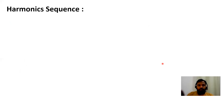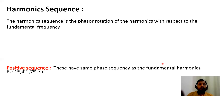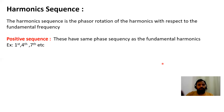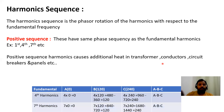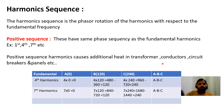Now we will see the harmonic sequence. Our fundamental sine wave — these harmonics, how they are rotating with respect to our fundamental — is discussed here. There are three types: positive sequence, negative sequence, and zero sequence.